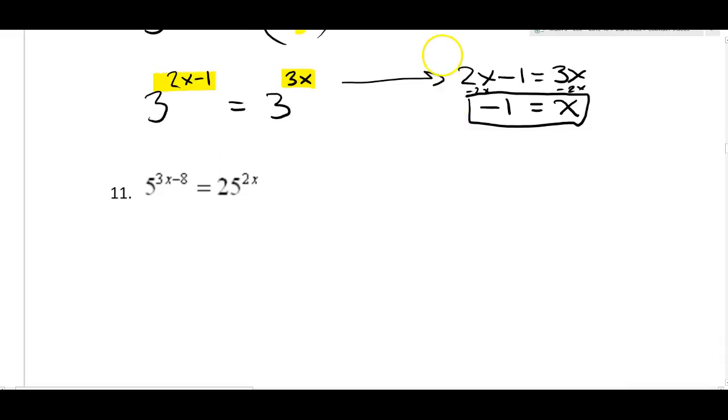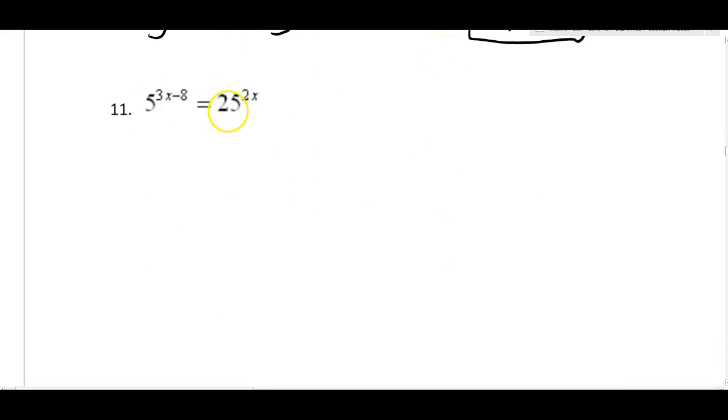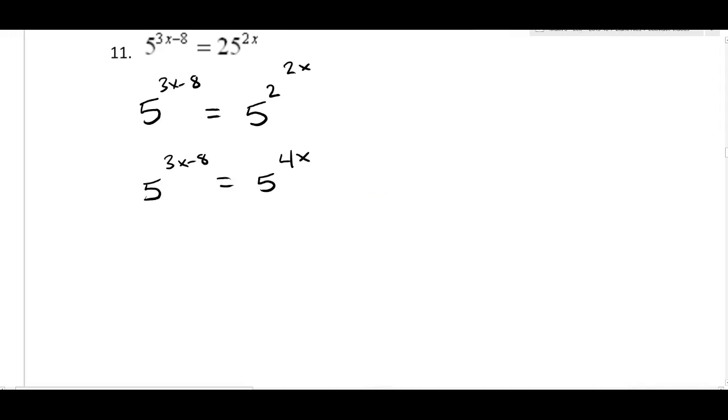Next problem. This is another base matching problem. 25 is five squared. So I'm just going to write this as five to the three x minus eight. 25 is five squared to the two x. So our five to the three x minus eight is five to the four x. Bases match, and there's one on each side, so we'll compare these directly. 3x minus eight is equal to 4x. Hey, let's subtract 3x again. So here's like a very popular trick. Minus eight equals x. And there's your x.